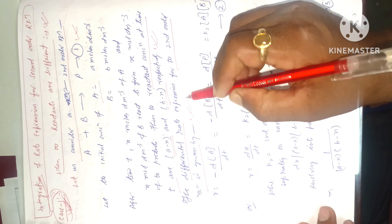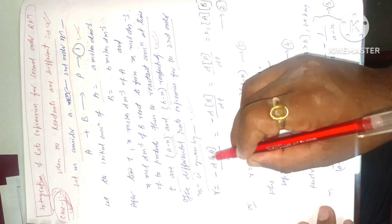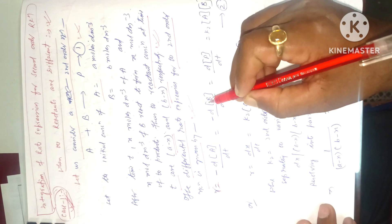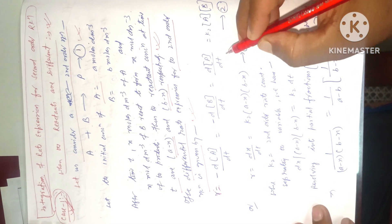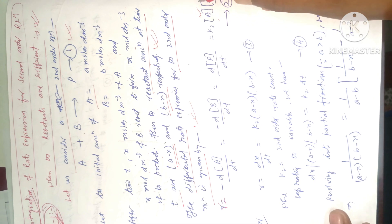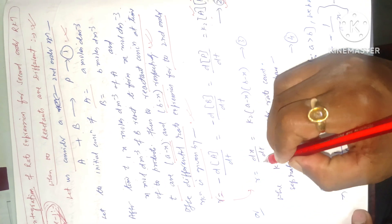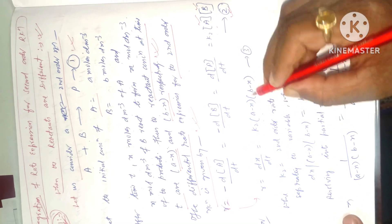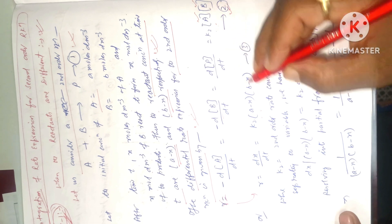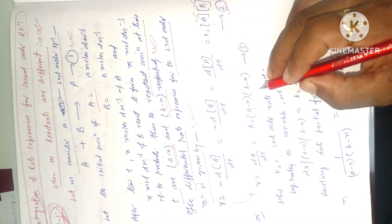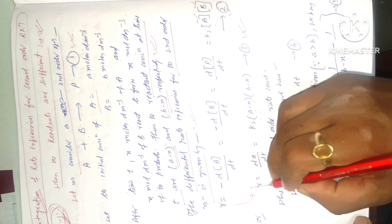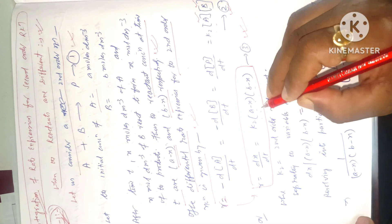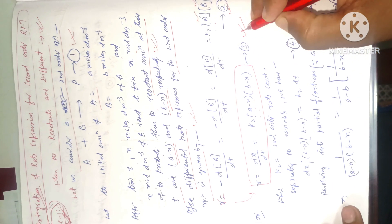The differential rate expression for the second order reaction is given by: r = −d[A]/dt = −d[B]/dt = d[P]/dt = k₂[A][B] (equation 2). Therefore r = dx/dt = k₂(a − x)(b − x), equation 3, where k₂ is the second order rate constant.